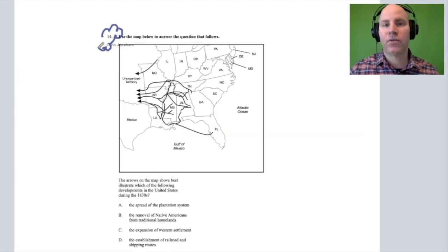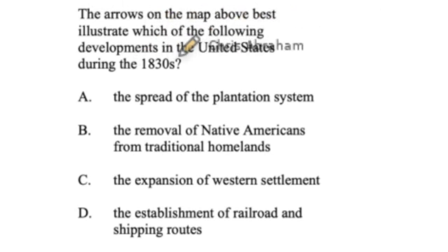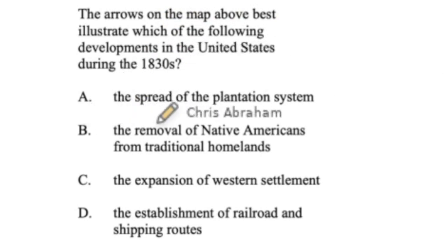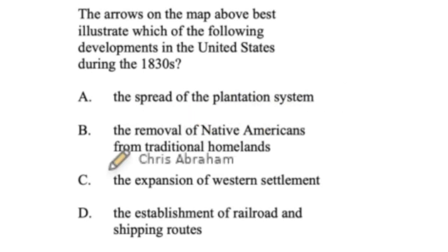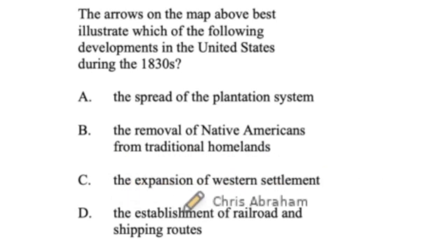This is number 14 on the MTL-06 history exam. The question reads: 'The arrows on the map above best illustrate which of the following developments in the United States during the 1830s?' A: the spread of the plantation system. B: the removal of Native Americans from traditional homelands. C: the expansion of western settlements. D: the establishment of railroad and shipping routes.